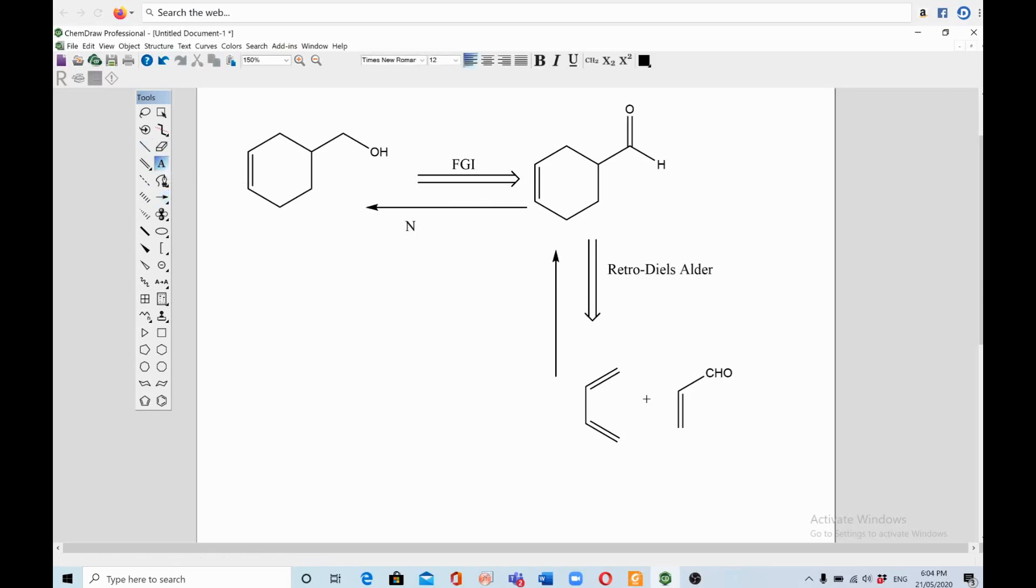Like sodium borohydride, NaBH4, it will give you the desired alcohol. That's it. And don't forget not to use strong reducing agent, they can probably reduce the double bond. So use a mild reducing agent such as sodium borohydride.